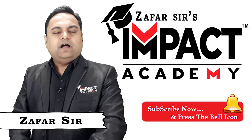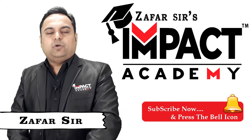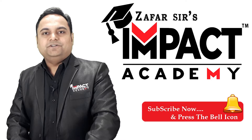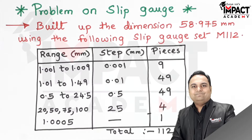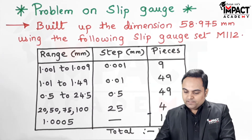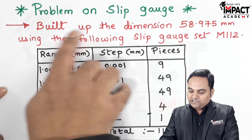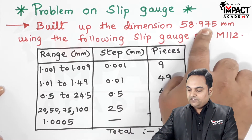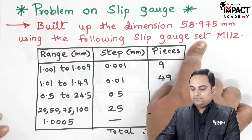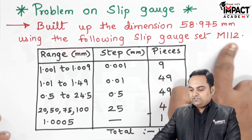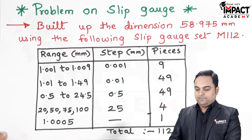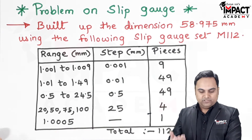In this video I'll be explaining a problem on slip gauges. The question is: we have to build up the dimension 58.975 mm using the M112 slip gauge set. First, I'll explain what a slip gauge is.